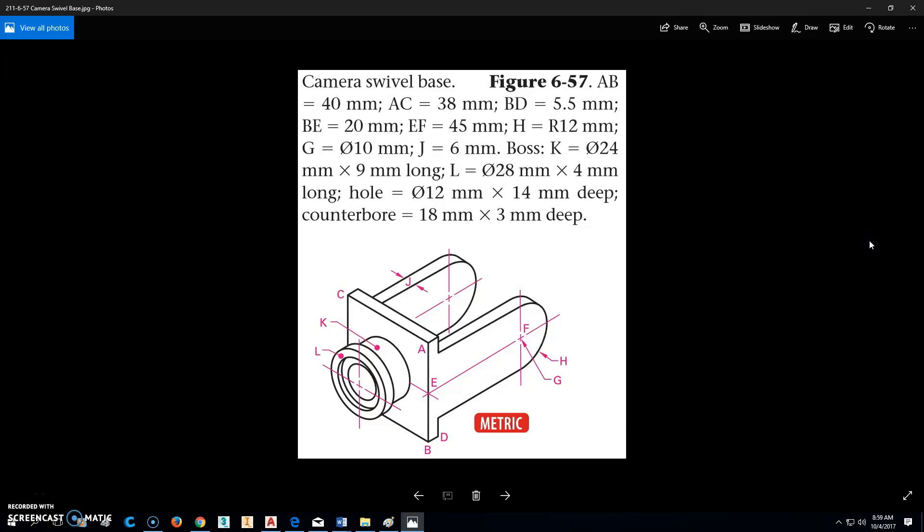So here's the part we're going to be working on, 211-6-57. It's a camera swivel base. All the numbers you need are right here.